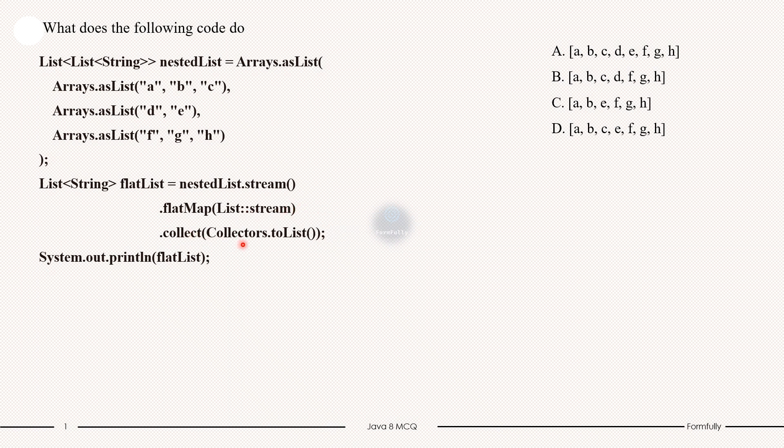Then the third step is collecting the flattened stream. We use Collectors.toList method to collect the flattened stream into a new list. This gives us a single flattened list containing all strings from the nested structure. So then we have printing the flattened list, so it will print A, B, C, D, E, F, G, H in a single line.